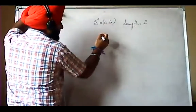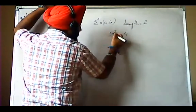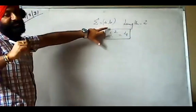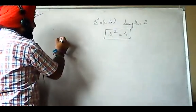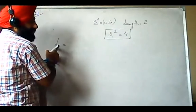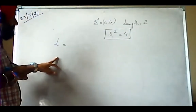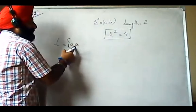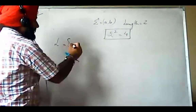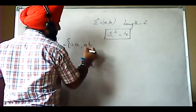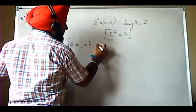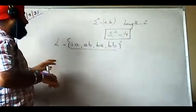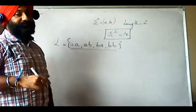Since the length is 2 and there are 2 inputs, 2 raised to the power 2 equals 4 — so 4 combinations will be used for processing these two inputs. First, we construct the language L. The four strings in the language are: aa, ab, ba, and bb. These are the four combinations taken from {a, b}.